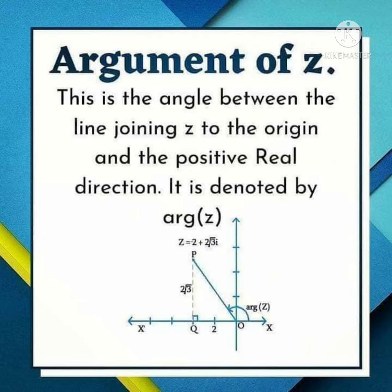Argument of Z. This is the angle between the line joining Z to the origin and the positive real direction, which is denoted by arg(z).